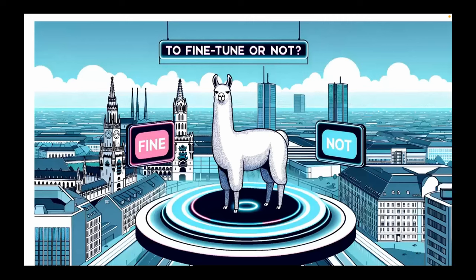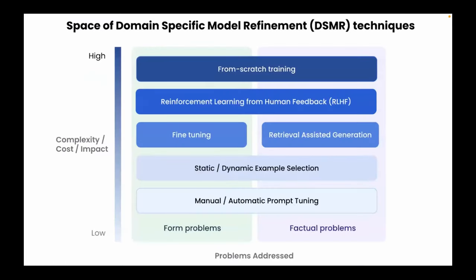Let's come to the question: to fine-tune or not. People call this paradigm transfer learning and fine-tuning, but it's mostly not fine — at least for people who don't have access to high-end GPUs, because many things can go wrong. You should start with prompt engineering and then gradually go higher in complexity. The x-axis here represents the problems addressed, and the y-axis is the complexity of the methods. If you care about the style or form of the problem, you should start with manual or automatic prompting of the language model, as it tries to encapsulate both.